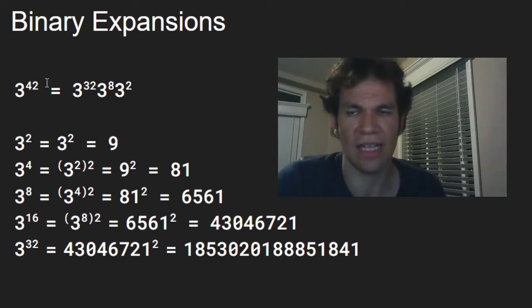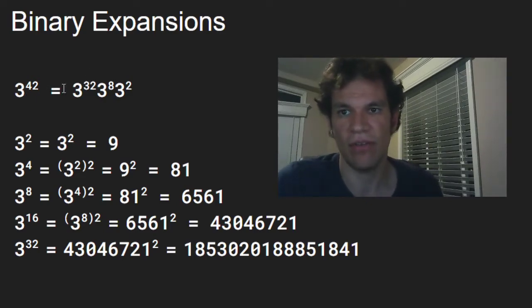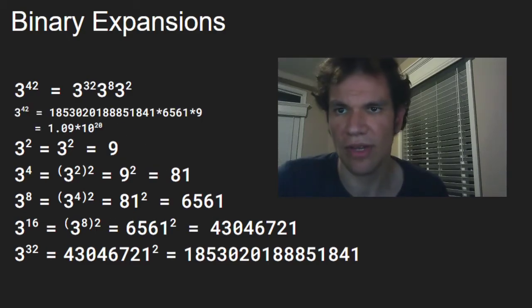Then we know that 3 to the power of 42 is this thing over here. And also we already know the values of this. Then after a simple substitution and a couple of multiplications, we get the result. 1.09 times 10 to the power of 20.